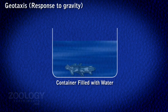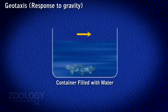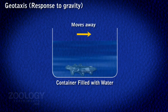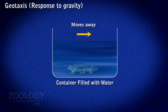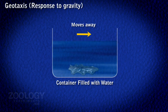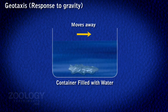Amoeba does not have a nervous system or special sense organs for the conduction and perception of stimuli. The sensitivity is solely the function of the protoplasm.